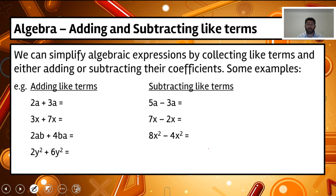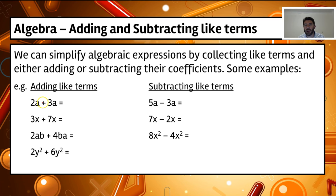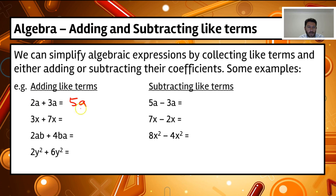Now we're going to add and subtract these like terms. Think of 'a' for apples: 2 apples plus 3 apples gives us 5 apples. Notice the 'a' doesn't change — all that changes when we're adding and subtracting like terms is the coefficient. So for example, 3x plus 7x: 3 plus 7 gives me 10, and we keep the x, giving 10x.